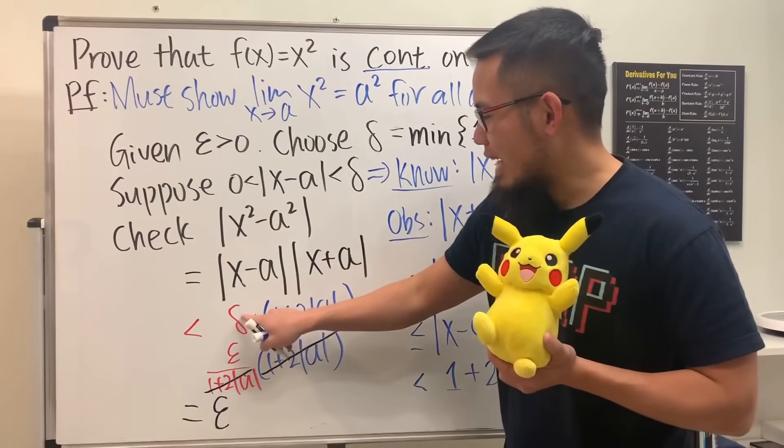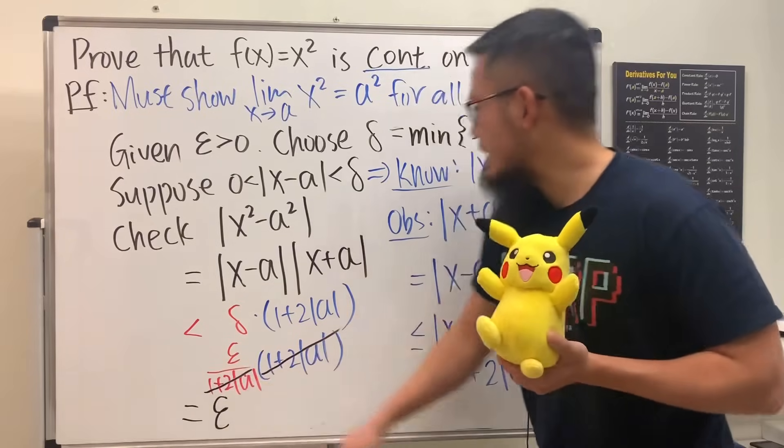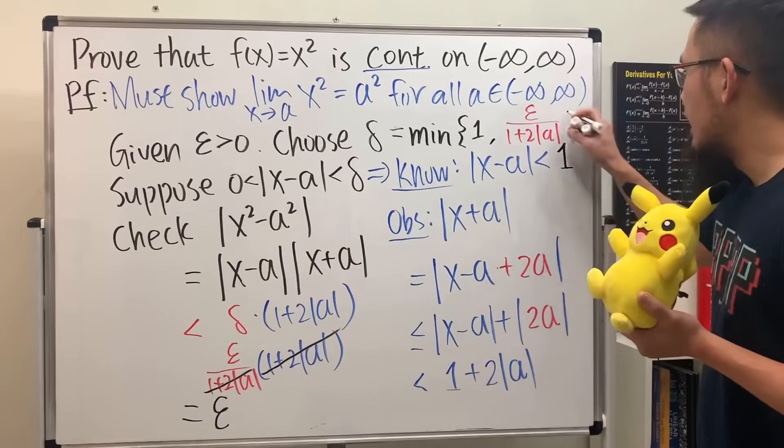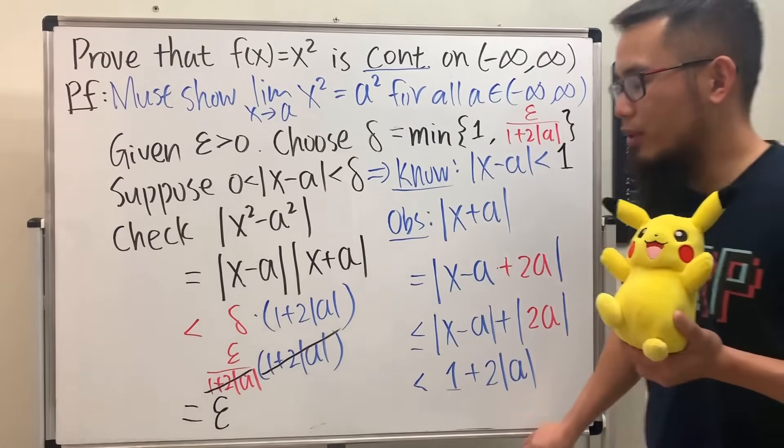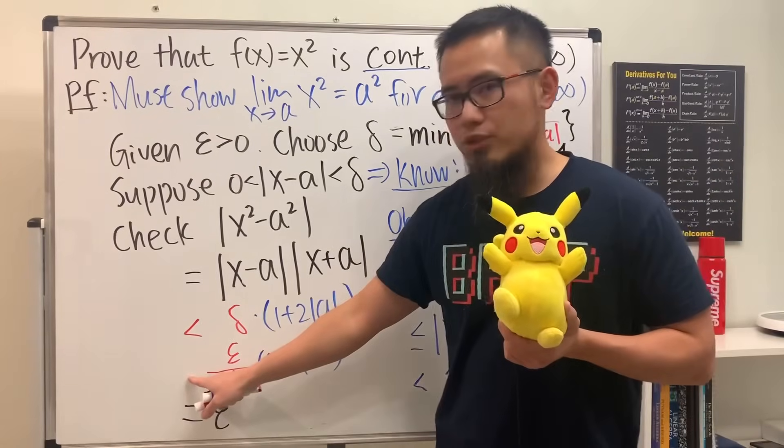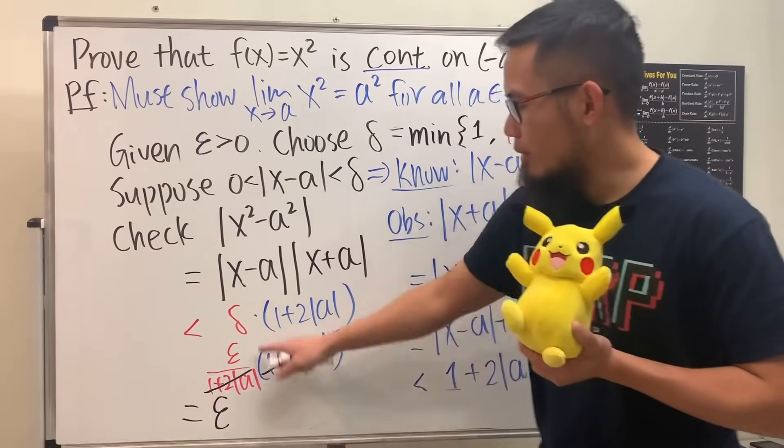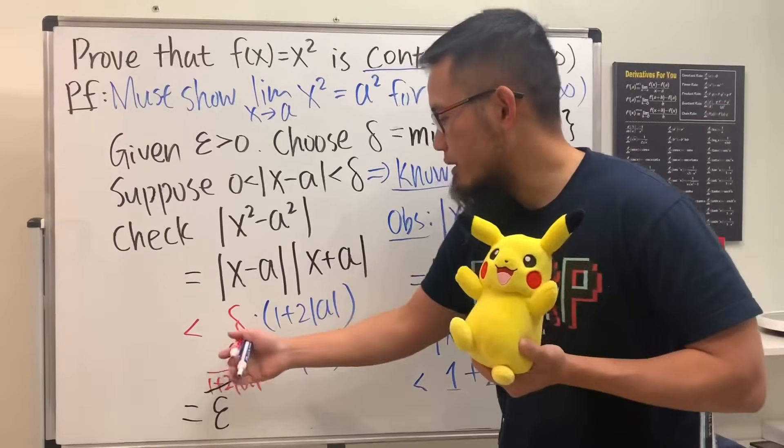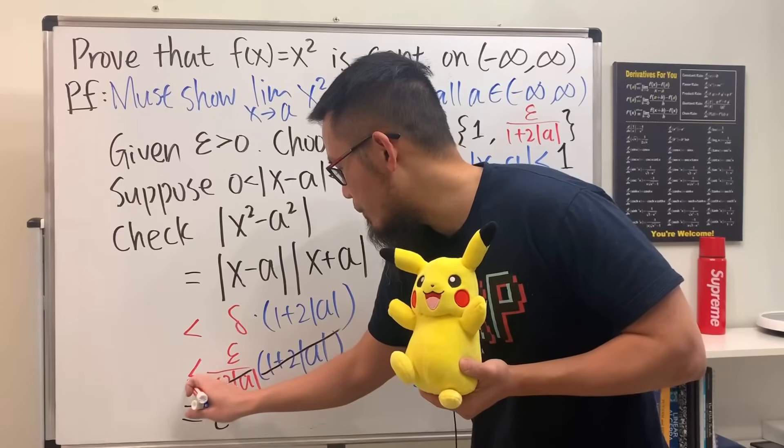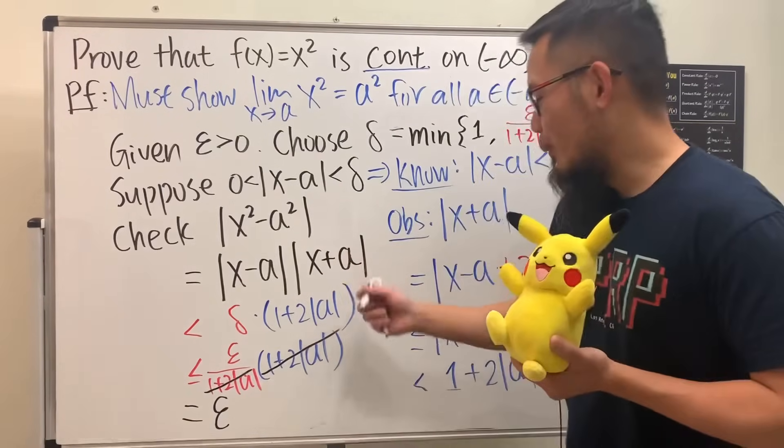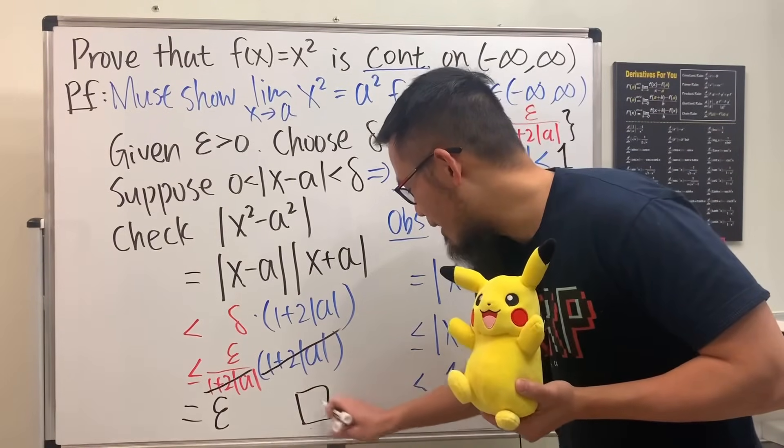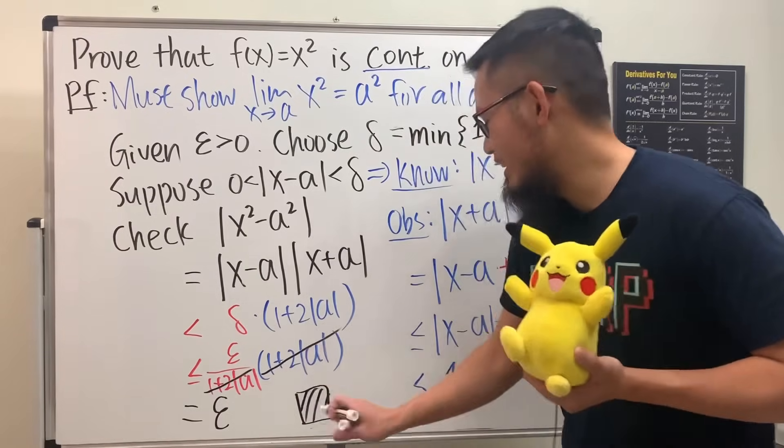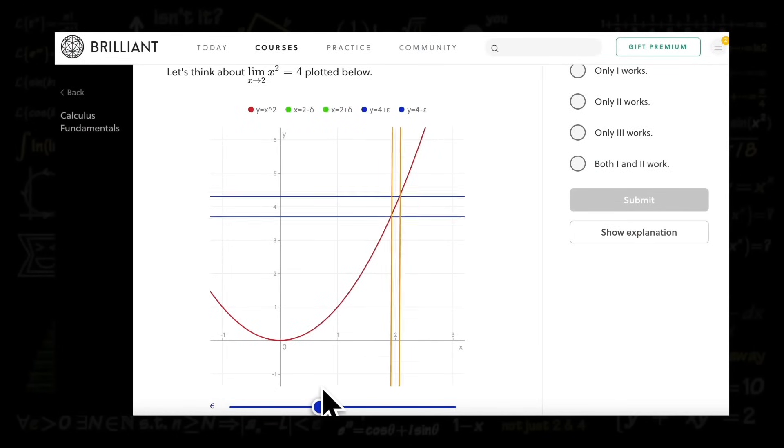We just have to write down delta right here. And we do have one little thing to take care of: what should this inequality be? Well, because delta is the minimum of this and that, so this inequality right here is going to be less than or equal to. Therefore we are all done. So you can put on the box and shade this in.